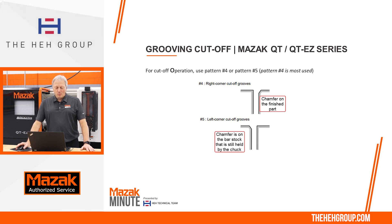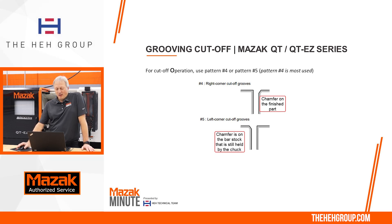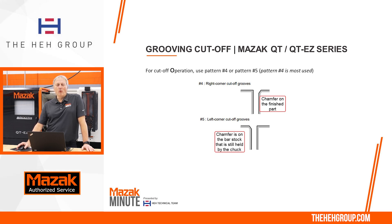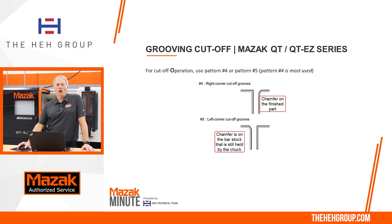If we look at our screen we have the groove cutoff operation, and in a grooving cycle you're going to use either pound four pattern or the pound five pattern. Most people will choose pound four because the chamfer will go on the part that gets cut off. With number five, the chamfer is on the side that is still in the chuck, which most people want on the back side.